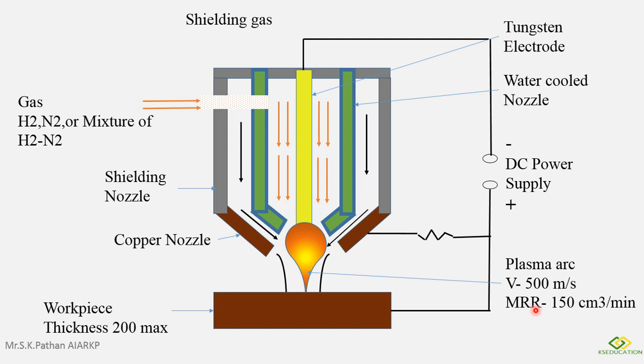And metal removal rate is 150 centimeter cube per minute. In this way, this machine works.